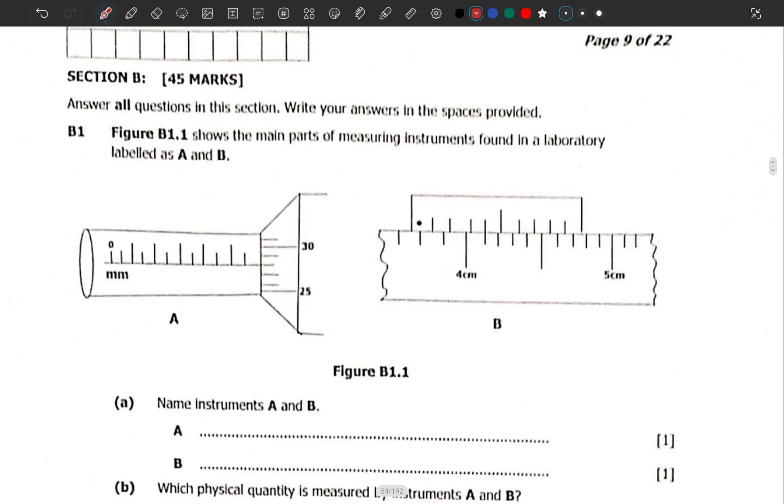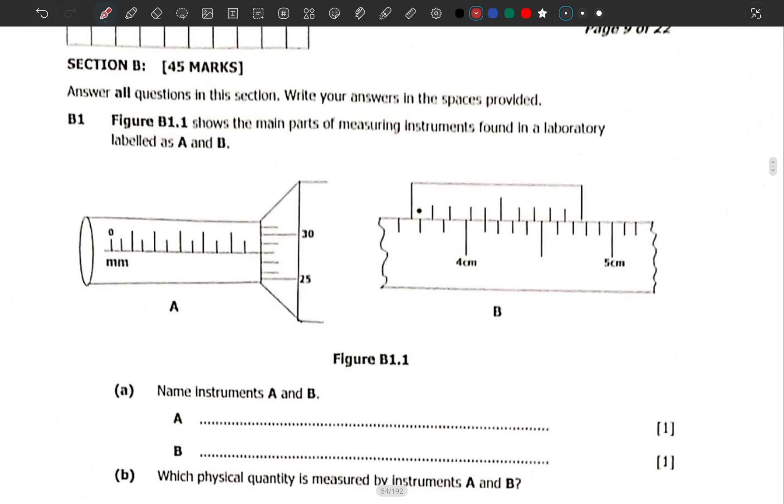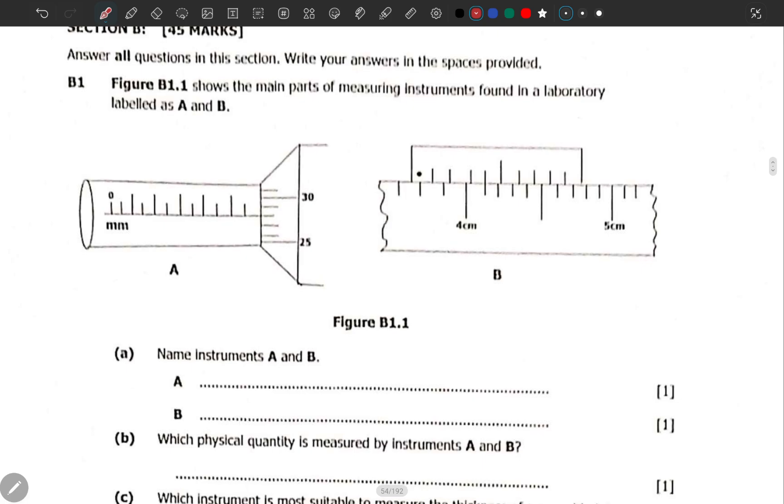This is question B1 which says Figure B1.1 shows the main parts of measuring instruments found in a laboratory labeled A and B. You should be able to recognize these instruments. Name instrument A and B. This scale is coming from a micrometer screw gauge. This is a micrometer screw gauge. B is coming from vernier calipers.